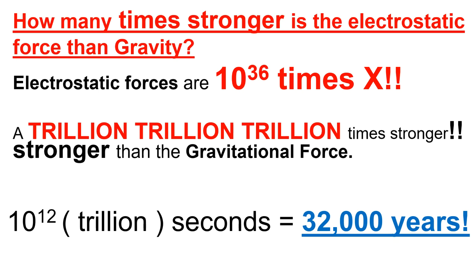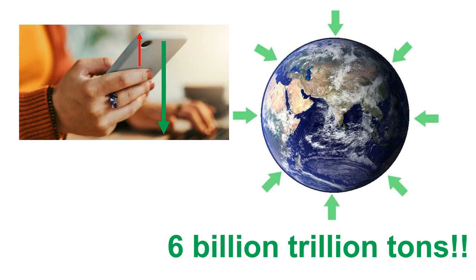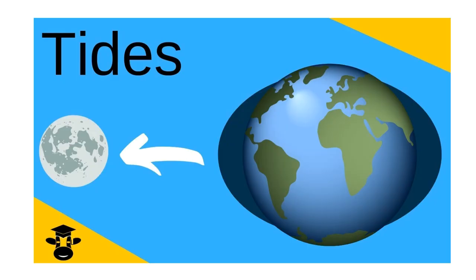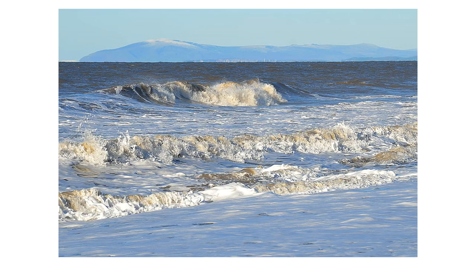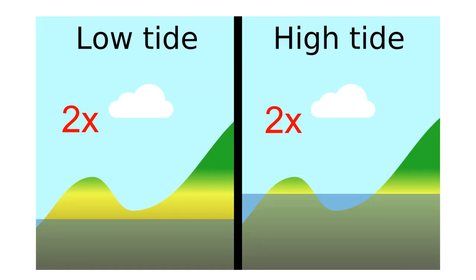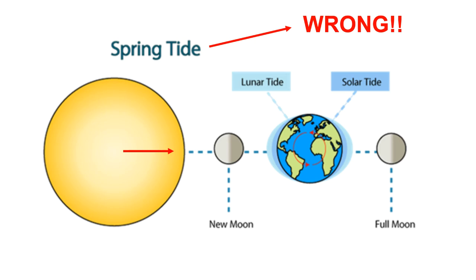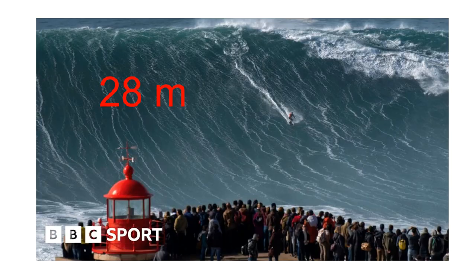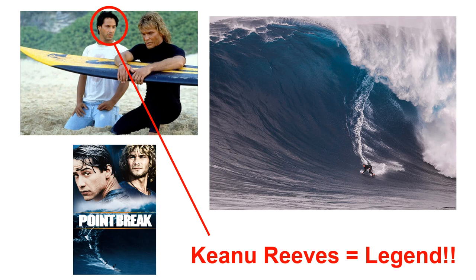To illustrate: a trillion seconds is 32,000 years. The whole of planet Earth — all six billion trillion tons — is pulling down on your phone with gravity, yet you easily overcome it with your hand muscles. Gravity also drives tides: the Moon pulls the oceans, giving high and low tides twice a day. When the Sun lines up with the Moon, you get exceptionally high spring tides.